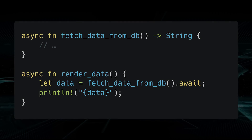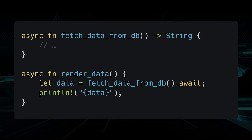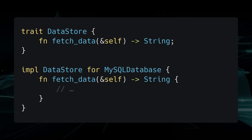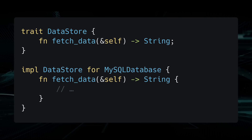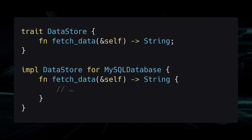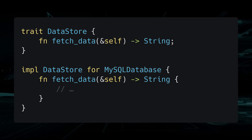This syntax is very similar to the async/await syntax in JavaScript. Traits, on the other hand, are a way to define shared behavior in Rust, similar to interfaces or abstract classes in other languages.